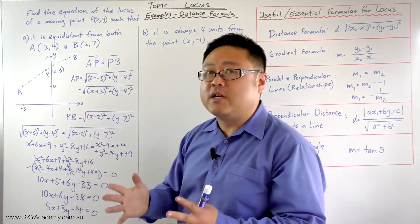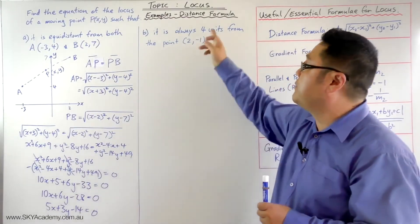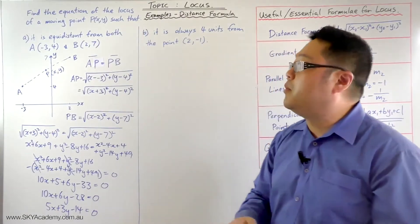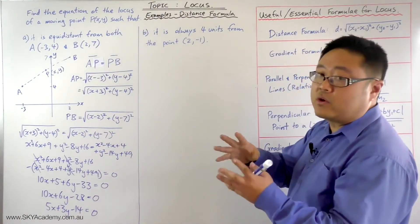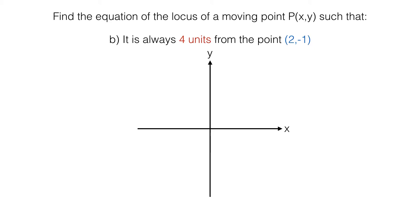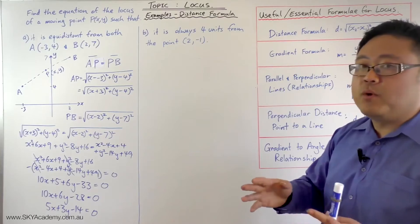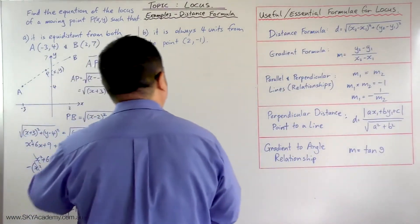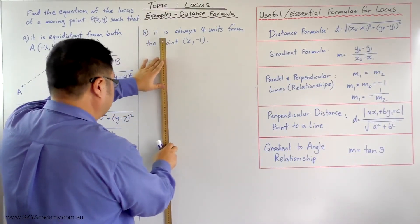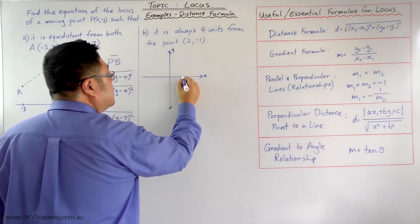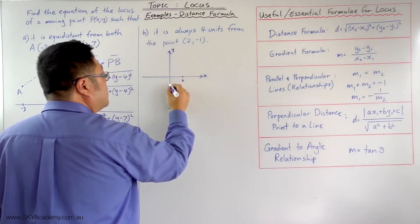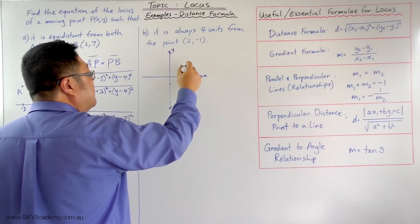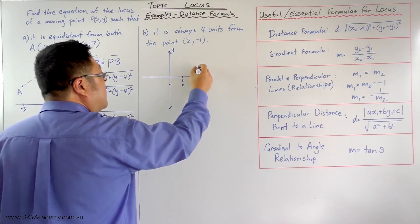So there you have it — that's the first type of question in terms of the distance formula. Another one, which is an easier one: we want the equation of the locus of a moving point P with coordinates (x, y), such that it is always 4 units from the point (2, −1). This one is probably more obvious — it is a circle. We've got the point (2, −1) as the center, and we want the locus that is always 4 units away.